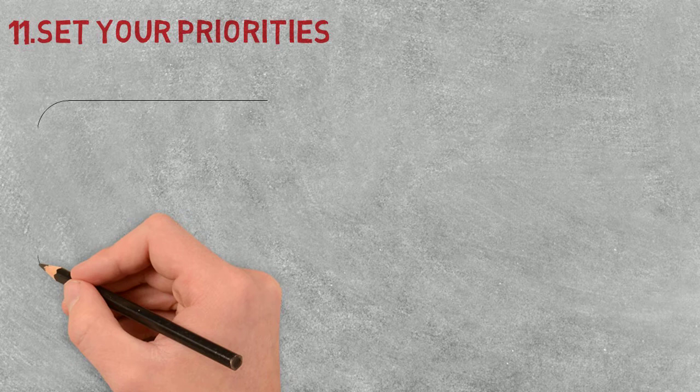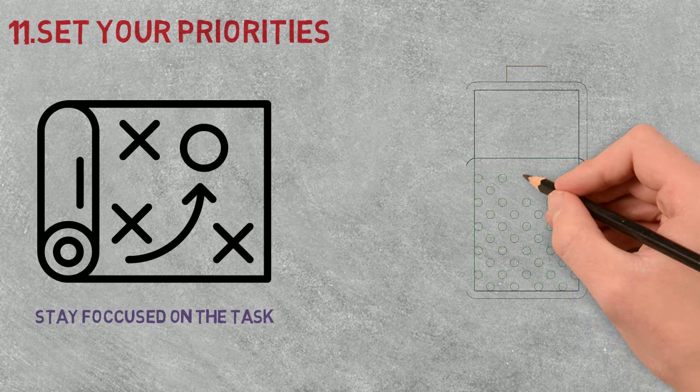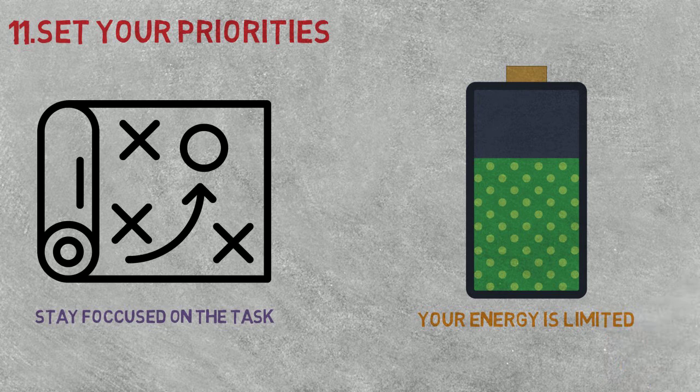Finally, tip number eleven, set your priorities. When you are set on your path to mastery, you may look to improve several areas of your life. The thing is, everyone has a set amount of energy and time. It is simply not possible to do everything. Choose what you want to do most, devote yourself. Your priorities are free to change, but make sure you stay focused.